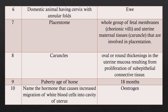Question 7: What is a placentome? Answer: The whole group of fetal membranes — that is, chorionic villi — and uterine maternal tissue — that is, caruncles — that are involved in the formation of the placenta. Together, the chorionic villi and caruncles make up the placentome.